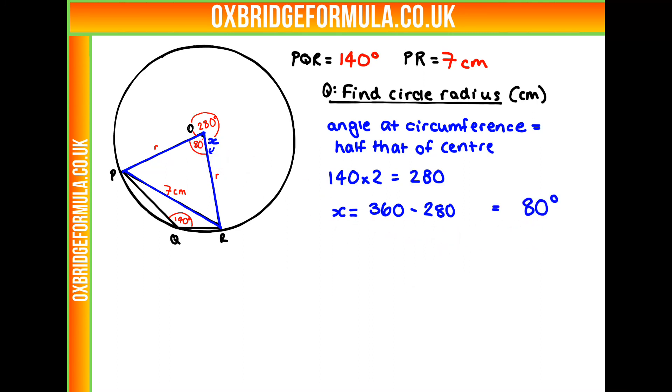So there we go. And what else can we know about this triangle, this blue triangle here in the middle? We know it has two equal lengths. That must mean it's an isosceles triangle. So we can draw it kind of like this. So this is our isosceles triangle. We have two lengths R there, and a 7 at the bottom, and our angle of 80 degrees.